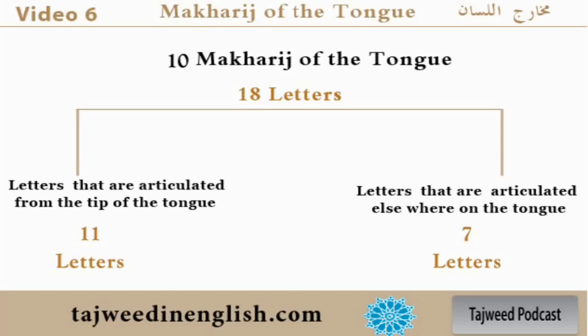The points of articulations of the tongue — in Arabic language most of the letters are produced and sound from the tongue. The main areas include the tip of the tongue, the sides of the tongue, the middle, and the back near the epiglottis. There are 17 or 18 letters of Arabic language divided into 10 makharij — 10 points of articulation. Some points will have 2 to 3 letters, and some will have only 1 letter.